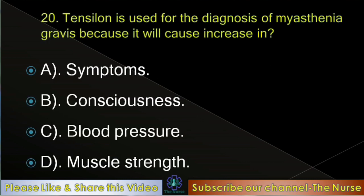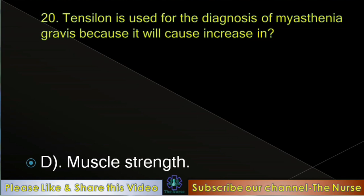Next question: Tensilon is used for the diagnosis of myasthenia gravis because it will cause an increase in — symptoms, consciousness, blood pressure, or muscle strength. Correct answer: Muscle strength. The Tensilon test is used for diagnosis of myasthenia gravis by assessing muscle strength.